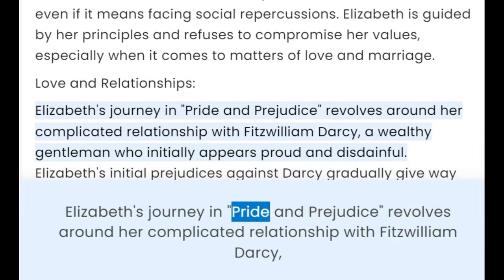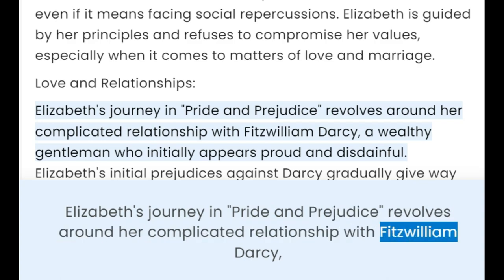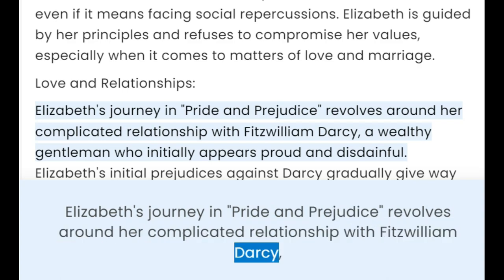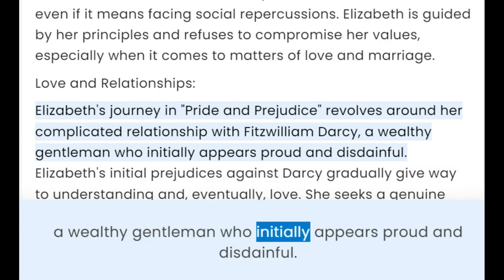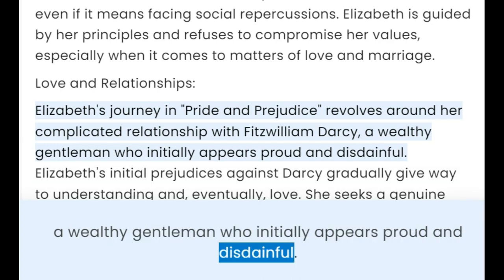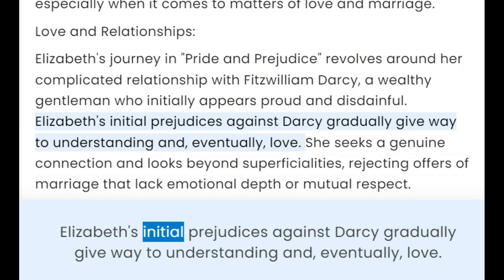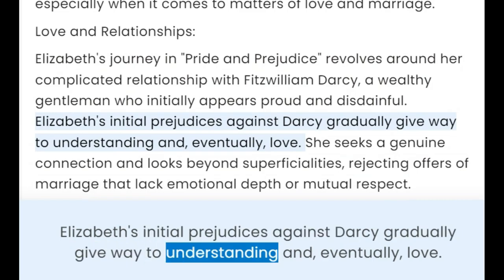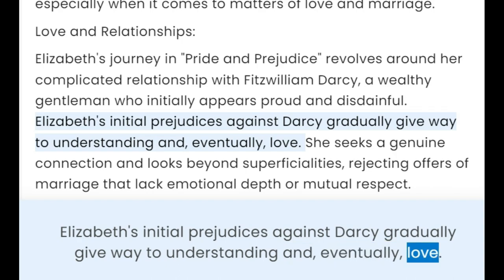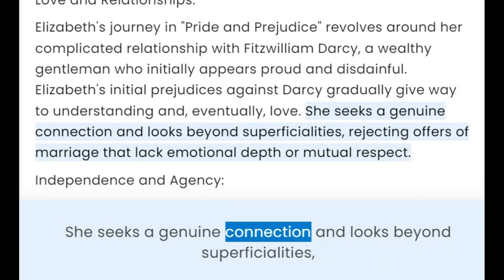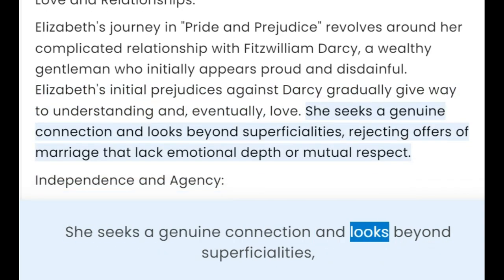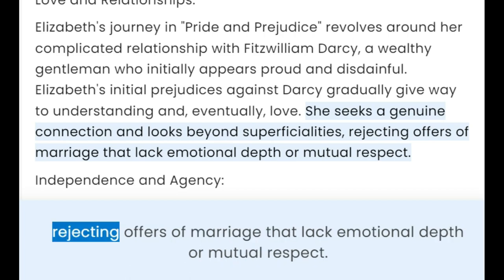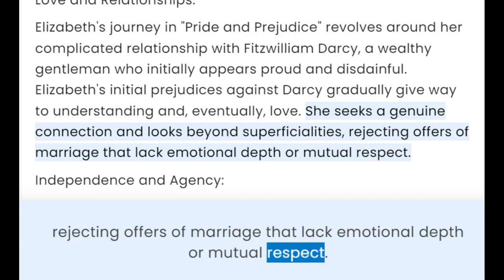Love and Relationships: Elizabeth's journey in Pride and Prejudice revolves around her complicated relationship with Fitzwilliam Darcy, a wealthy gentleman who initially appears proud and disdainful. Elizabeth's initial prejudices against Darcy gradually give way to understanding and, eventually, love. She seeks a genuine connection and looks beyond superficialities, rejecting offers of marriage that lack emotional depth or mutual respect.